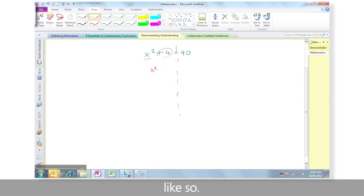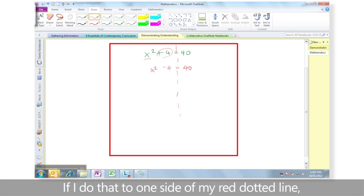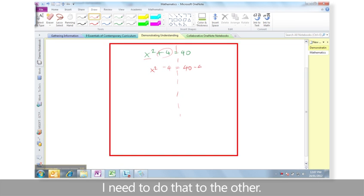If I do that to one side of my red dotted line, I need to do that to the other. I now have x squared equals 40 minus 4, which is 36.